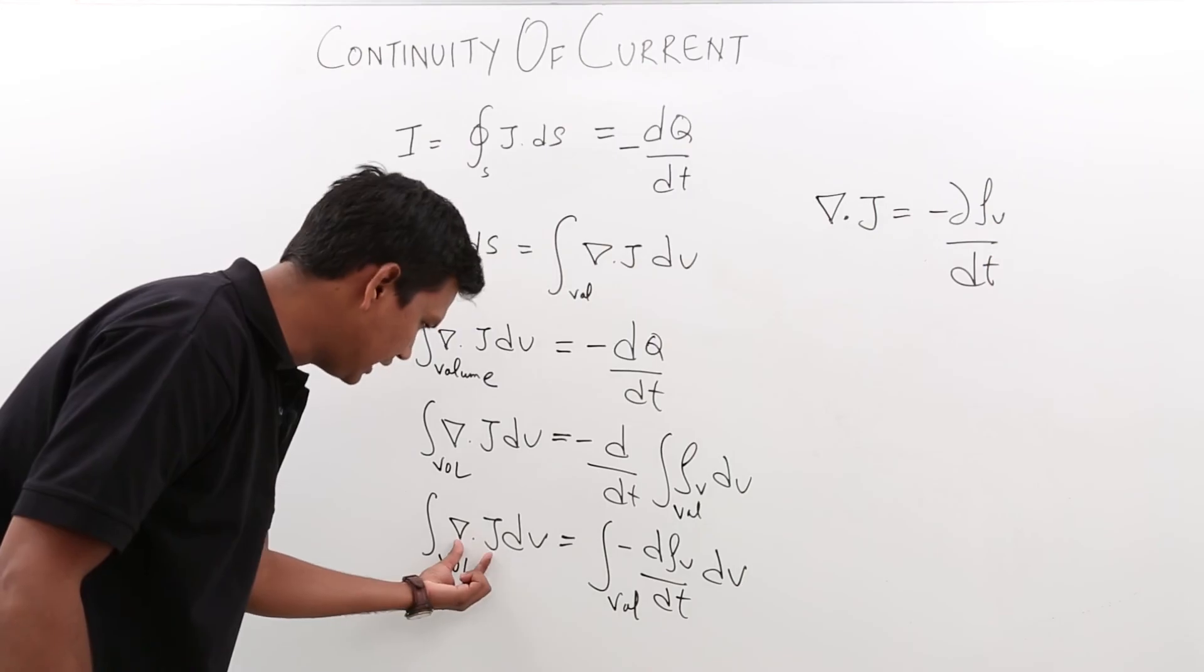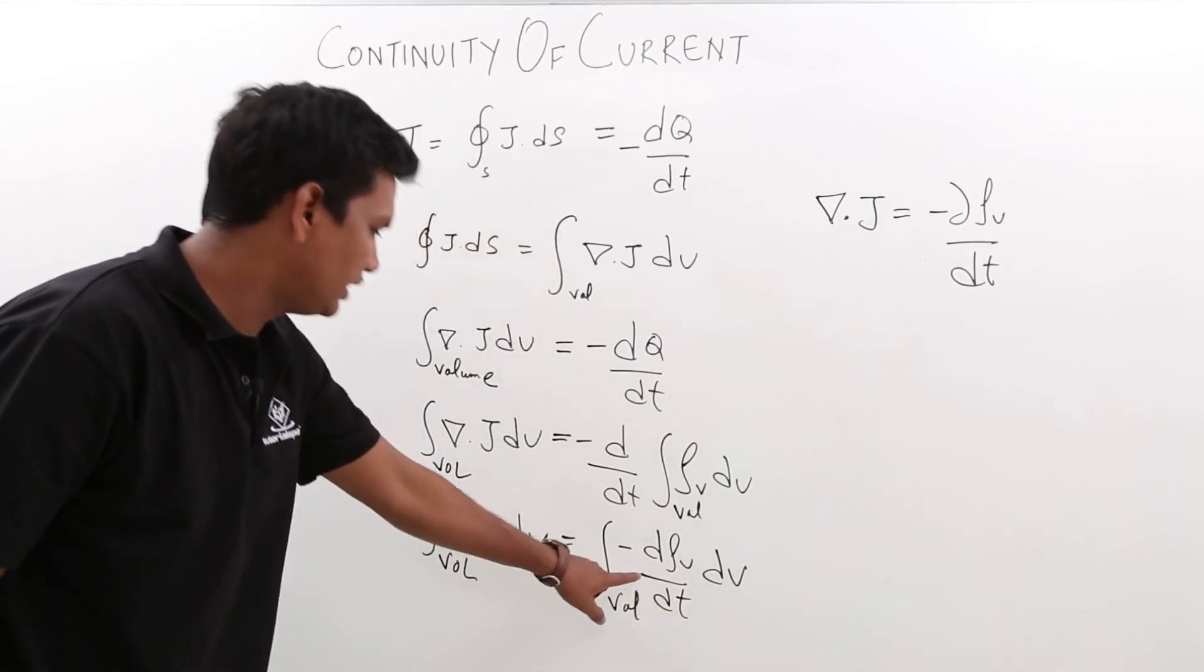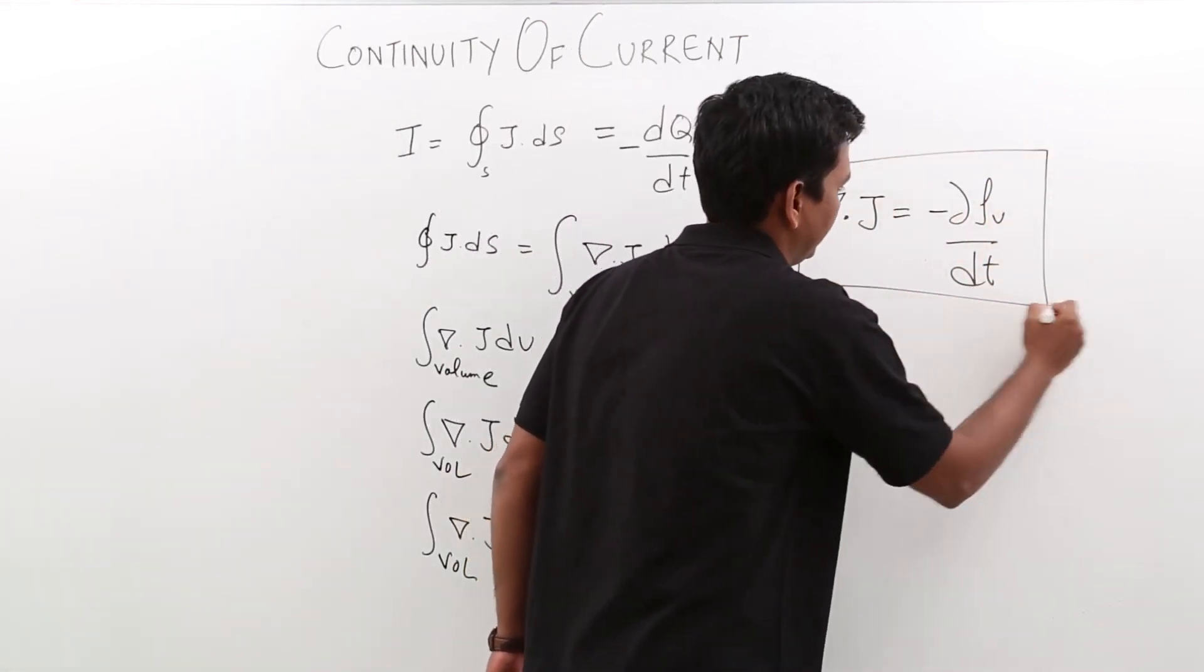After comparing the equations, because del dot j should be equal to d rho v by dt and the minus sign will carry forward. So this is called as continuity of current. We have derived the continuity of current equation.